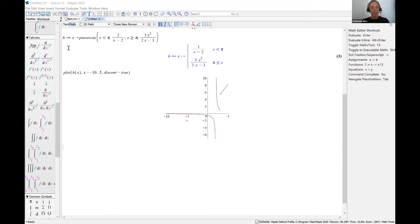The piecewise function that I have already defined says that h(x) is a piecewise function. When x is strictly less than pi, the function is defined as 1/(x-2). And when x is greater than or equal to pi, the function is defined as 3x²/(2x-1). And we can see that Maple understands that function.